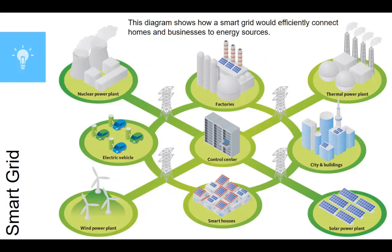This diagram shows how a smart grid would efficiently connect homes and businesses to energy resources, and it will save consumers money as well. A smart grid allows two-way communication between us and utility providers to increase the efficiency of our energy usage. By putting smart meters in houses, it helps us track how much electricity we're using, when we use it, and what it's costing us in real time, allowing us to limit electricity use during times when rates are higher. Building such a grid would cost about $800 billion over the next 20 years according to the Department of Energy.